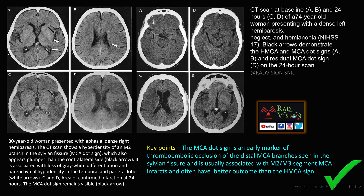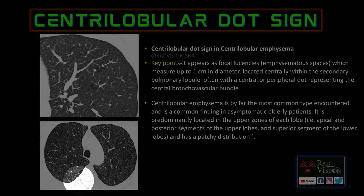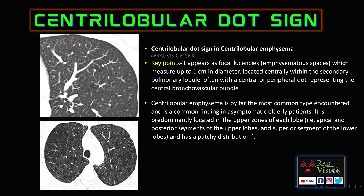Next, what is the centrilobular dot sign? The centrilobular dot sign is seen in centrilobular emphysema, where there are diffuse lucent emphysematous areas filling the core of the secondary pulmonary lobule. The central dot is the central bronchovascular bundle seen in the background of the emphysematous lucent secondary pulmonary lobule. Centrilobular emphysema is common in the apical and posterior segments of upper lobes and superior segments of lower lobes, with a patchy distribution.